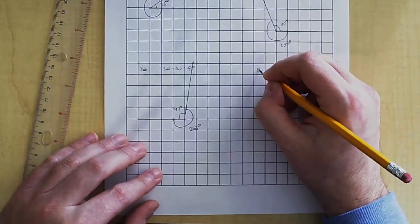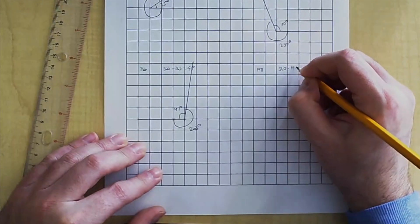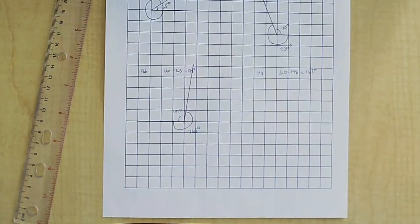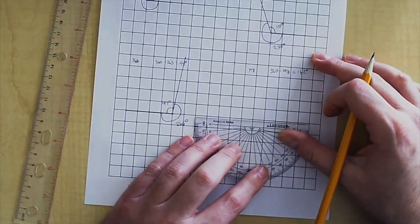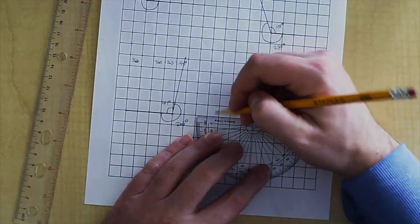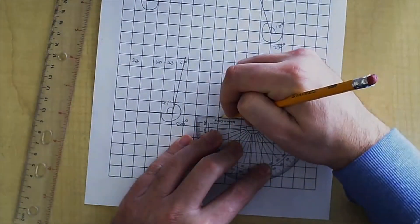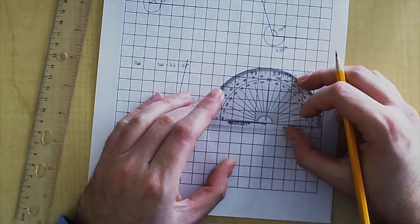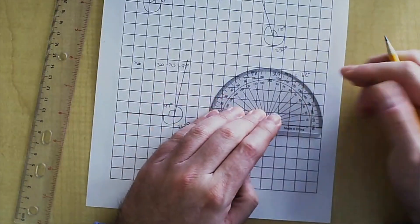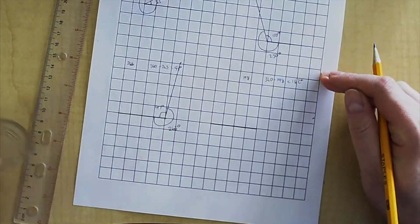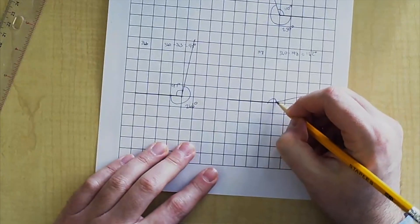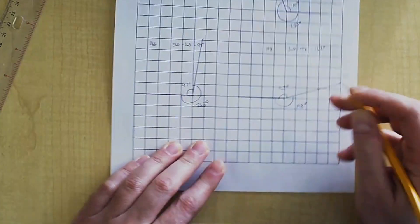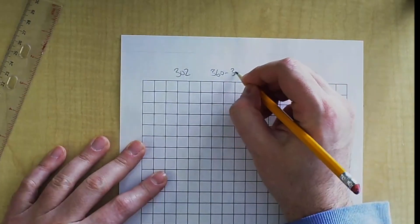The next one is 198. You go 360 minus 198 equals 162. You're now drawing a 162 degree angle. Draw the line at the bottom. Line it up here with zero. And find 162. 162 is over here. Connect it. This one here is 162. That means this angle here is 198 degrees.